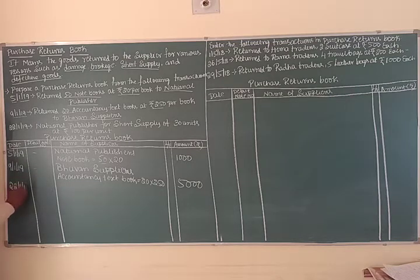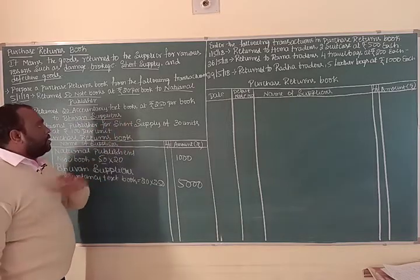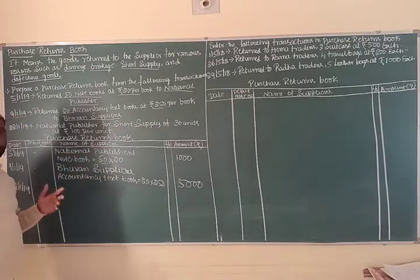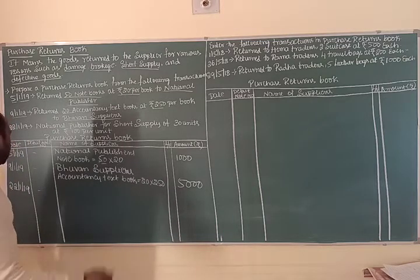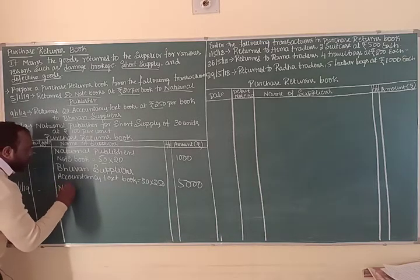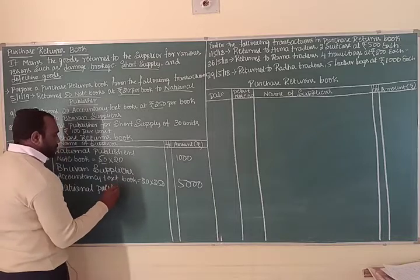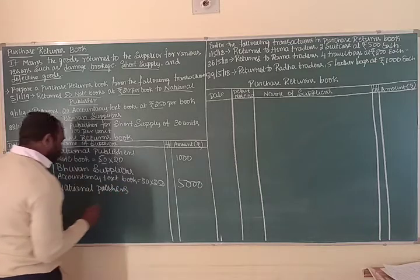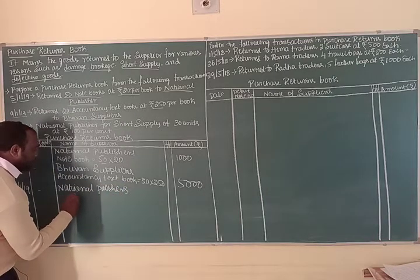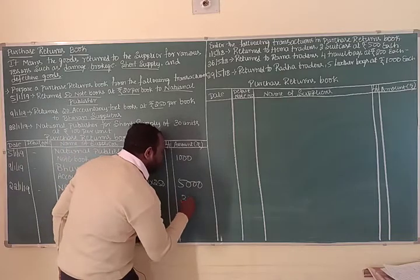Next, on 22nd January 2019, we returned goods to National Publishers for short supply — 30 units at Rs. 100 each. So 30 units into Rs. 100 — we get Rs. 3,000.